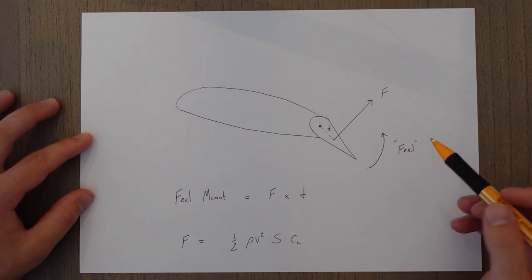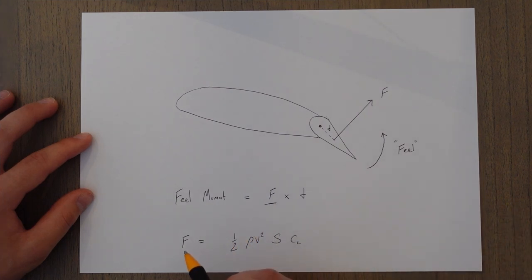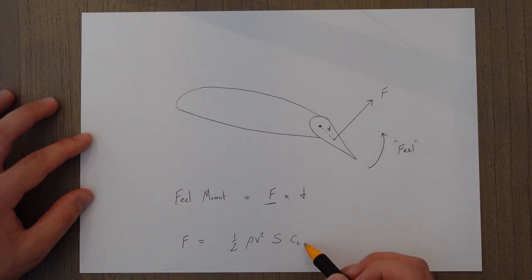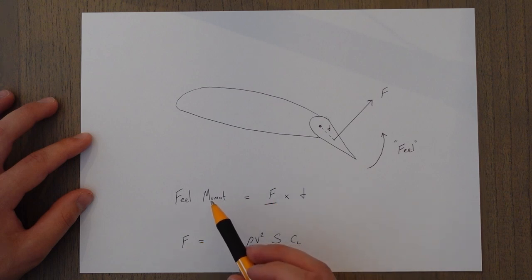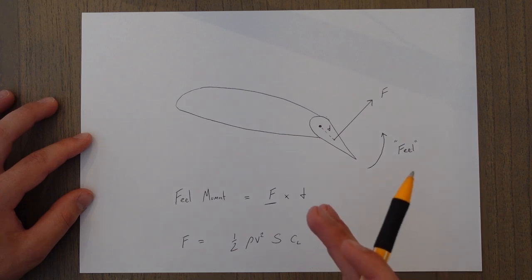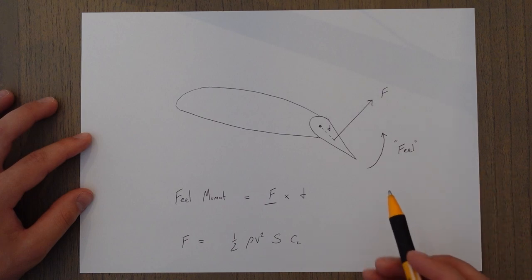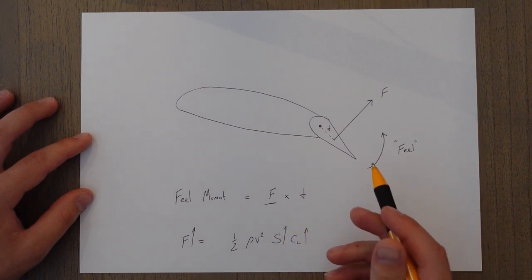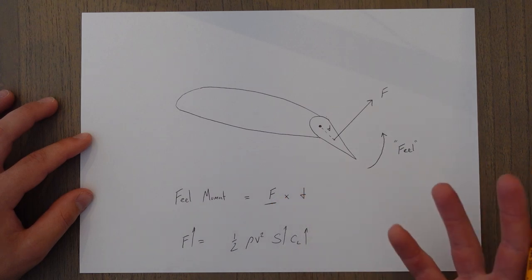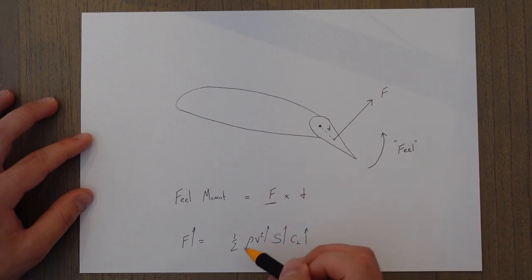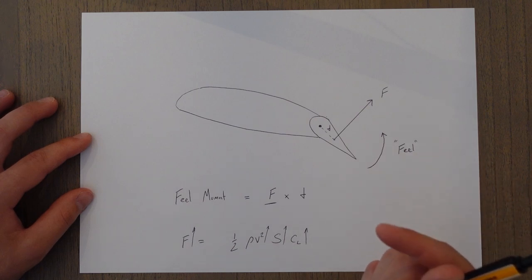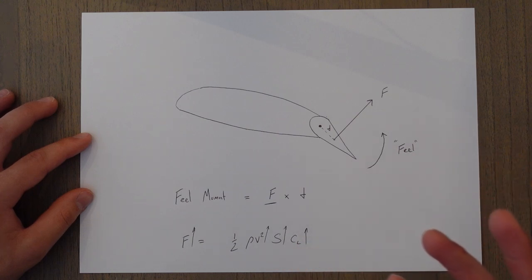The feel moment is directly related to the force produced, and the force is generated the same way as all our aerodynamic forces — it's one-half rho V-squared times S times CL. So we can make some assumptions about our feel moment: a higher coefficient of lift means a higher force and a more severe feel moment. Higher CL comes from deflecting the controls further, which increases camber and therefore CL. A larger control surface area means a larger force and more feel. And travelling faster — higher dynamic pressure — means we struggle more to move the controls. So faster speed, larger area, and more deflection all result in a larger feel moment, making the controls harder to move. In large aircraft, this can get so severe that you physically can't overcome it with your own muscles.